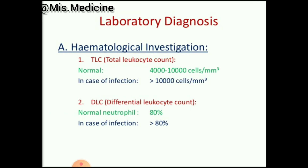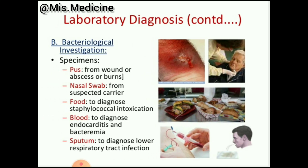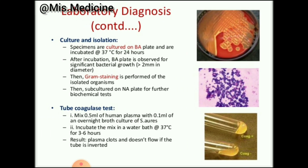Lab diagnosis can be made by hematological investigations — checking total leukocyte count and differential leukocyte count — and bacterial investigations using specimens like pus, nasal swab, food, blood, or sputum. Culture and isolation is confirmed by the tube coagulase test.